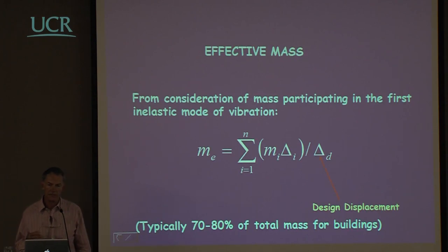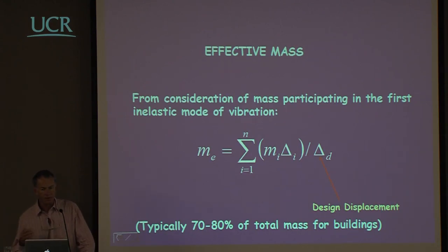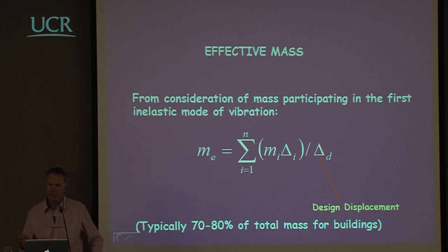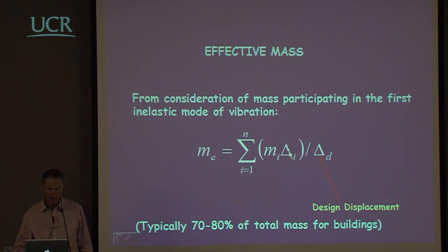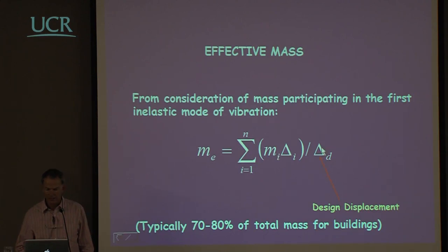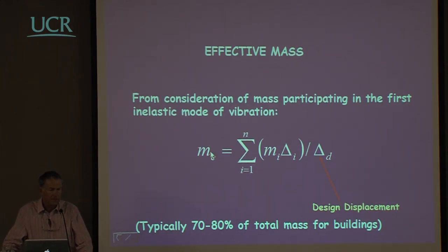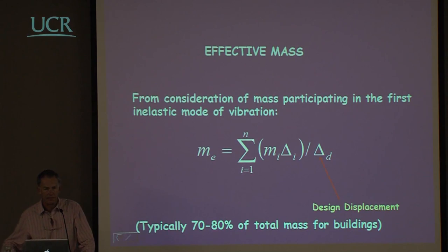The reason we only use the first mode is that the capacity design approach will take care of the higher modes. If we know the displacements of the individual elements and the associated masses — at floor levels in a multi-storey building — and we've calculated the design displacement, we can use this expression to calculate the effective mass. That's typically 70 to 80% of the total mass for buildings and about 90% for bridges.